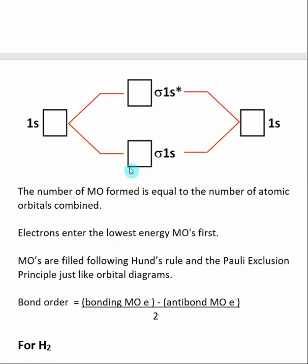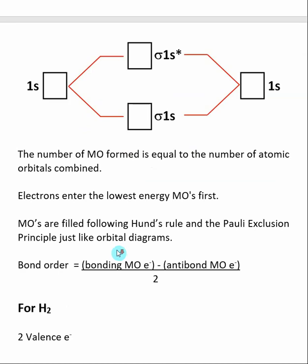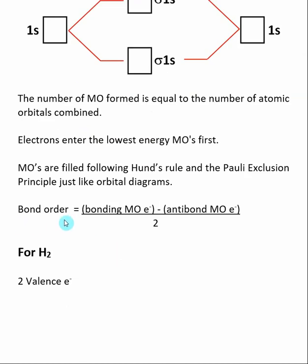Once we've placed our valence electrons into our molecular orbital diagram, we can determine the bond order between the two atoms. This is done by counting the number of electrons in bonding molecular orbitals, subtracting the number of electrons in antibonding molecular orbitals, and dividing by two. Bond order equals the number of bonds between the atoms — so a single bond has a bond order of one, a double bond has a bond order of two, and a triple bond has a bond order of three.